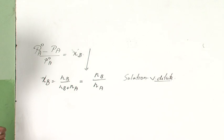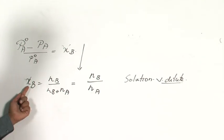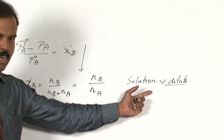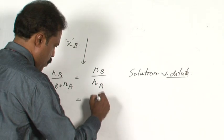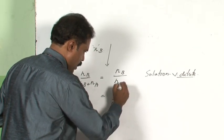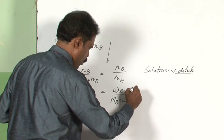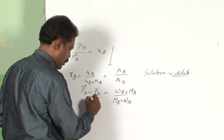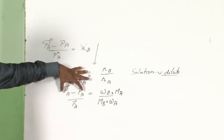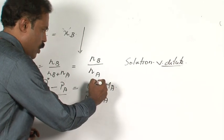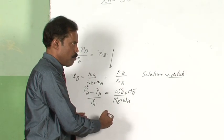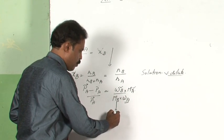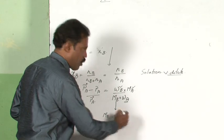This is an assumption we use when the solution is very dilute. XB becomes NB by NA, since the number of moles of B is very small. NB can be written as weight of the solute divided by molecular weight of the solute, and NA as weight of the solvent divided by molecular weight of the solvent. By measuring the relative lowering of vapor pressure and knowing the weight of solute, molecular weight of solvent, and weight of solvent WA, we can find out molecular weight of the solute MB.